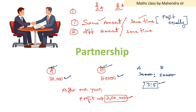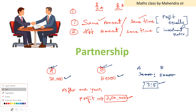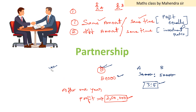So for category two, you take the ratio of their investments. Four zeros cancel on both sides, giving 3 is to 5. The profit should be shared in the ratio 3:5 based on the investment ratio. This is category two: same time period, different amounts — profit is shared according to the investment ratio.